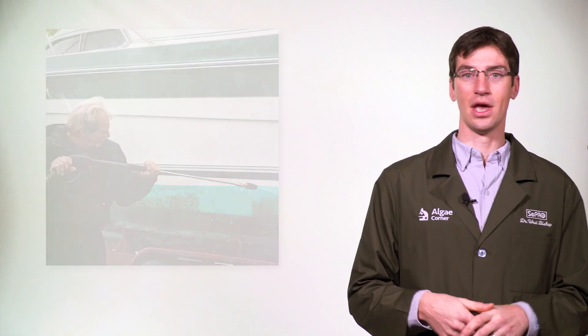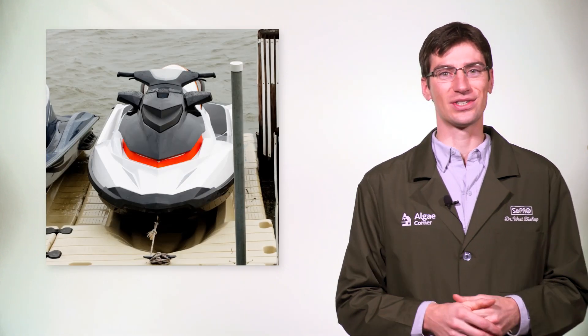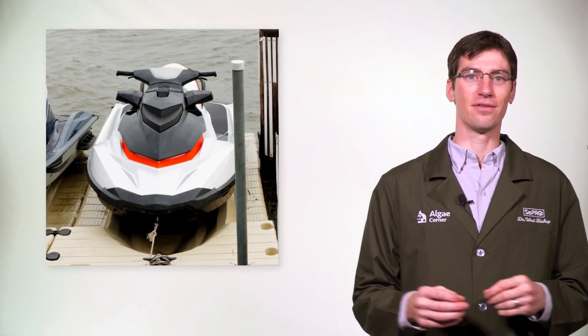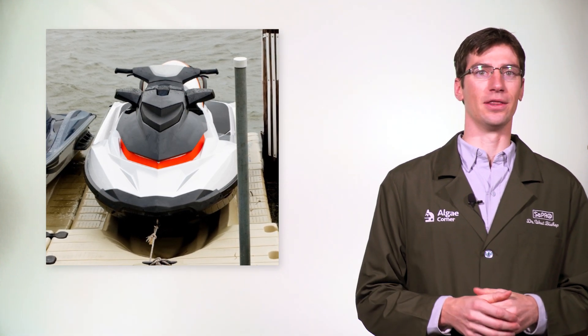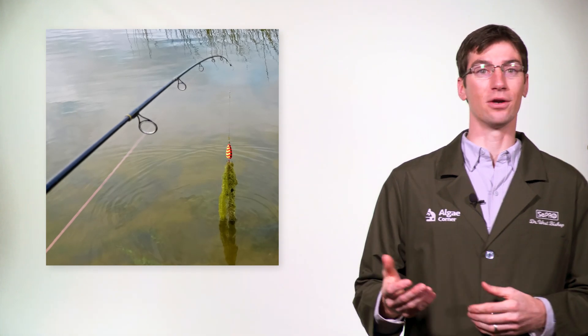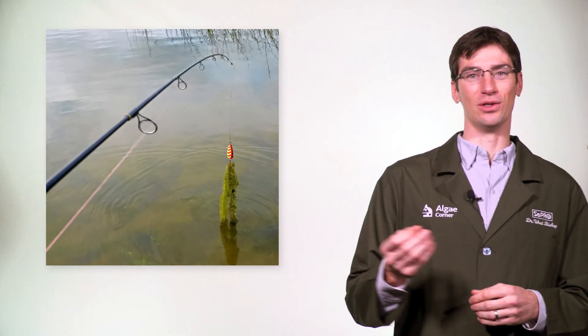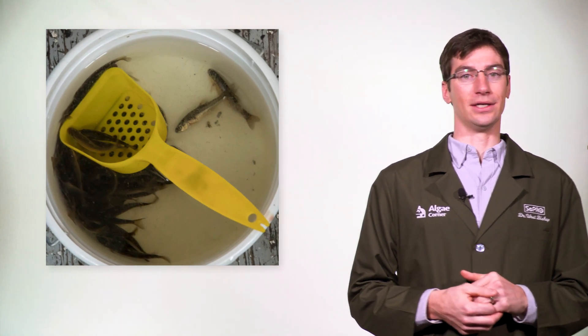Humans move algae around quite a bit, whether they know it or not. Boats, recreational activities, ski doos, and snorkeling can all have small algae on them — algae spores or algal cells that dry on them and move from water body to water body. Fishing equipment, waders, fishing poles, and lures can move algae from one water body to the next.